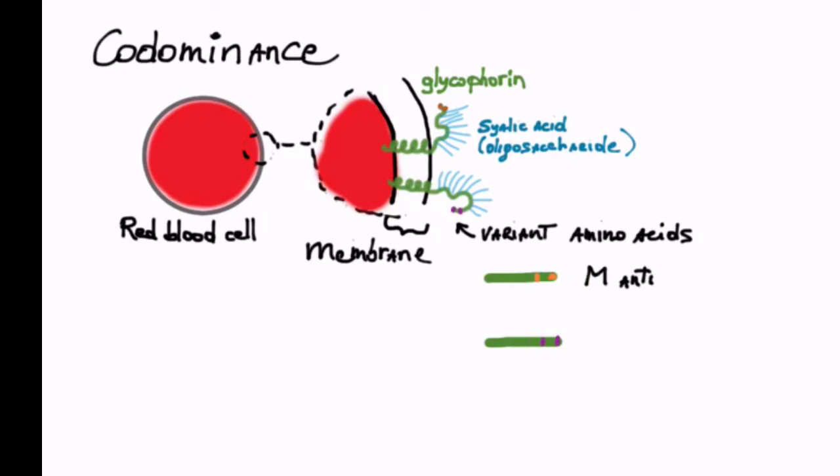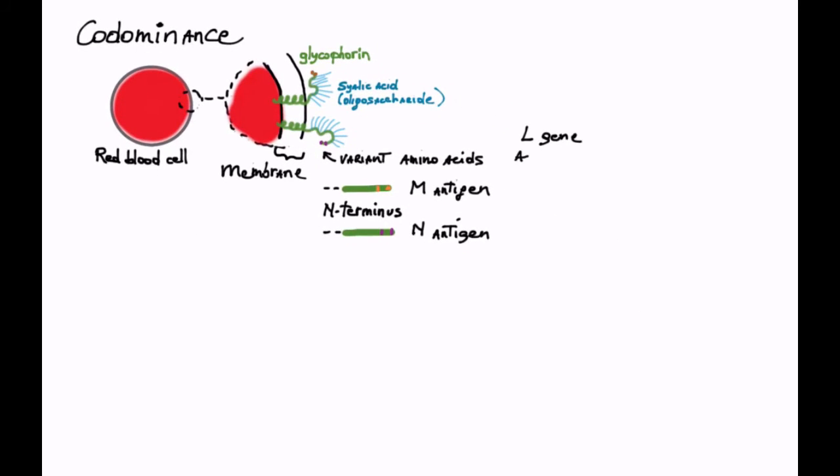M and N amino termini differ by two amino acid residues. Each is encoded by a different allele of the L gene. L M encodes the glycophorin with the M antigen and L N the glycophorin with the N antigen.